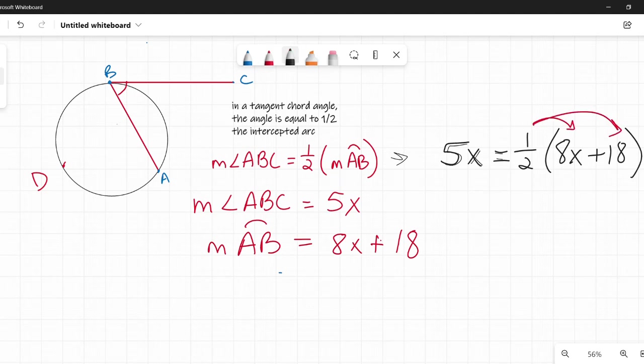So on the left, I still have 5X on the right. One half times 8X is 4X. And one half times 18 is 9. Then I'm going to subtract 4X from both sides so that all of my variables will be on the left and the numbers will be on the right. 5X minus 4X is X. And I just have 9 left on the right.